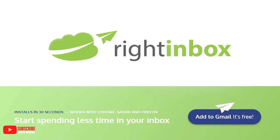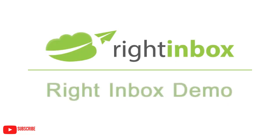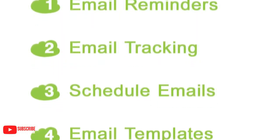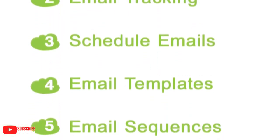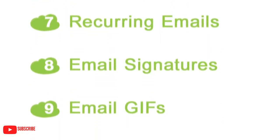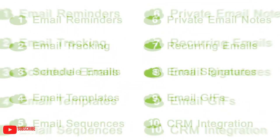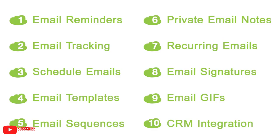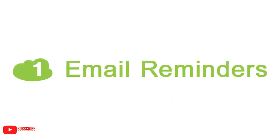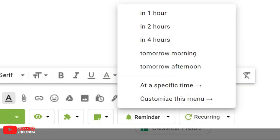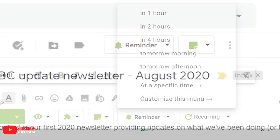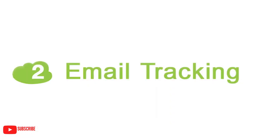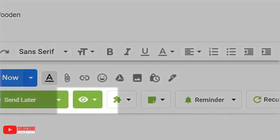Next in line is Right In Box. It's a clever email productivity tool that lets you schedule your Gmail emails so that they can be sent at a later time. It also allows you to set reminders for follow-up emails.